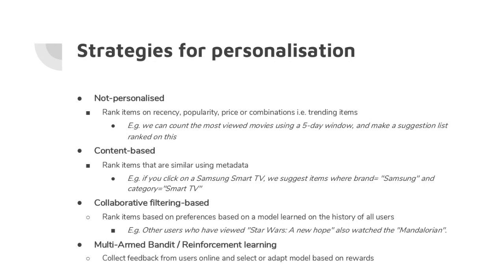The fourth category uses multi-armed bandits or reinforcement learning. Here the recommender is treated like an AI agent: it shows recommendations, receives feedback from users, and updates its model based on rewards. If users click a lot, that's a reward; if they don't click, the agent adapts to show more relevant recommendations. For today, we'll focus only on content-based and collaborative filtering techniques.